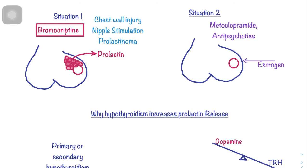Excess prolactin can occur after a chest wall injury — for example, after mitral valve replacement surgery — causing hyperprolactinemia. In a male this can cause gynecomastia; in a female it causes tender, enlarged breasts. Both can develop galactorrhea. Other causes include nipple stimulation by a baby, or a benign tumor called prolactinoma. Treatment involves a dopamine analogue called bromocriptine, which inhibits prolactin release.